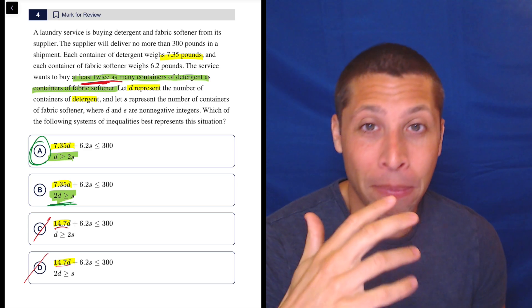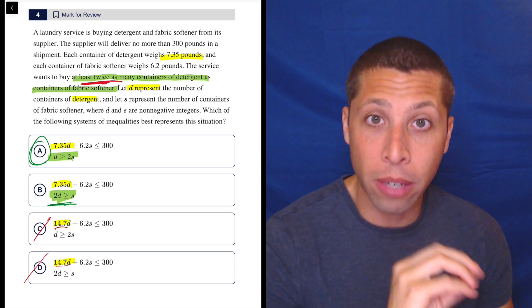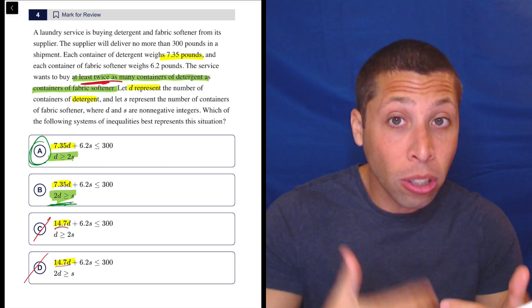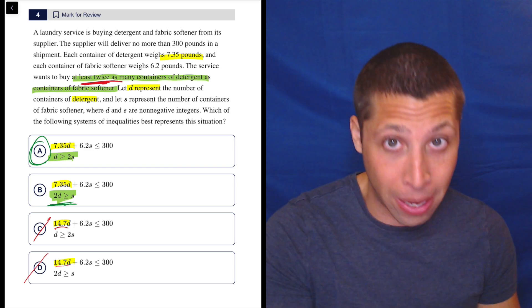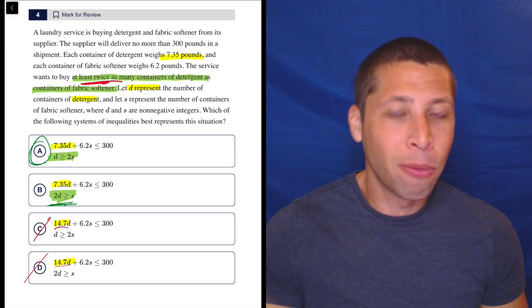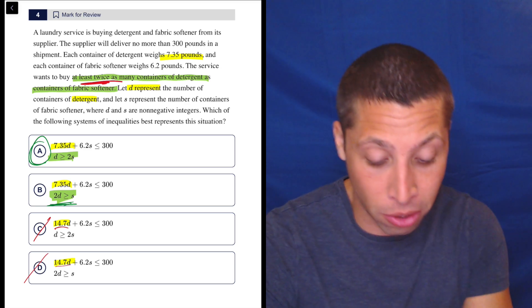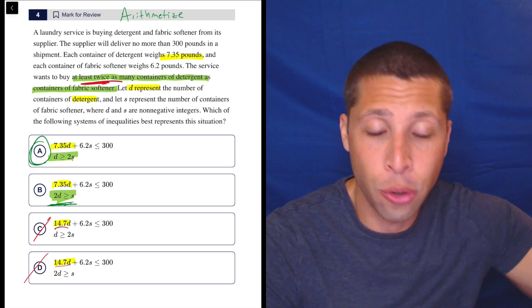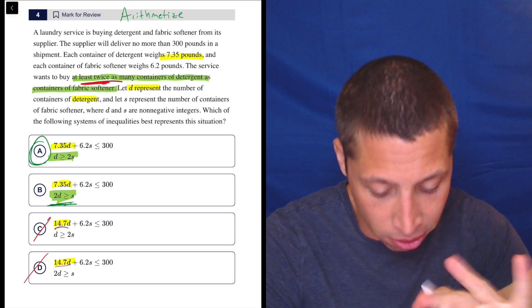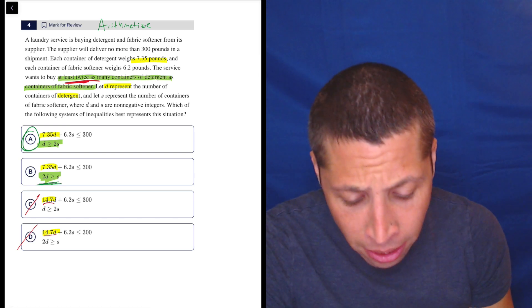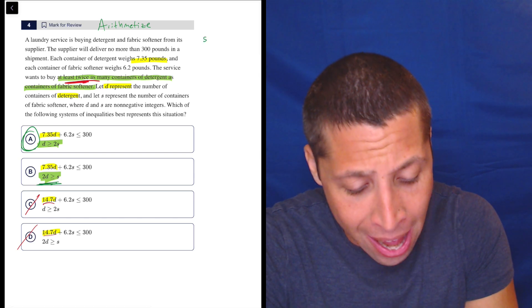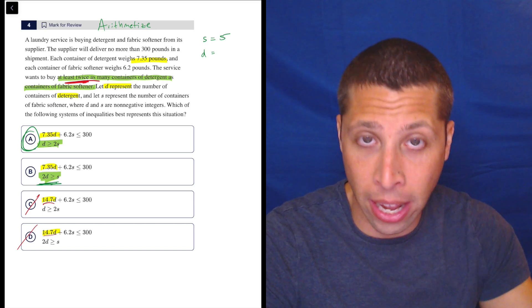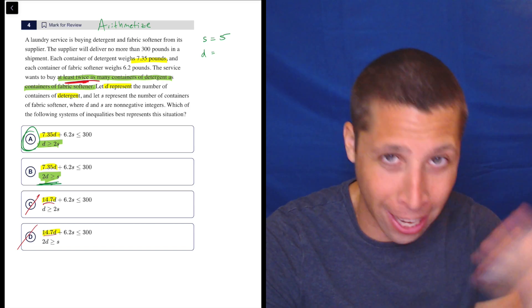So how can we figure this out? Some of you intuitively will recognize that when they say twice as many containers of detergent, we actually need to multiply the softener by two. But some of you are going, wait, why? Let me show you why. Let's pick some numbers. Let's arithmetize because we can put some numbers to this sentence to make it make more sense. So let's just assume for a second that we have five softeners and we can think of a number for the detergent that would then satisfy the sentence. S is softeners and my fives also look like S's, so that helps.